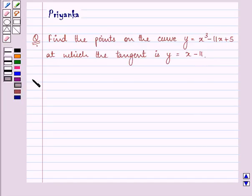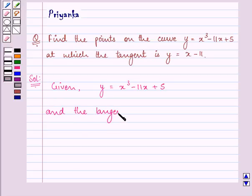We are given the curve y equation as x cube minus 11x plus 5, and the tangent is y equal to x minus 11.